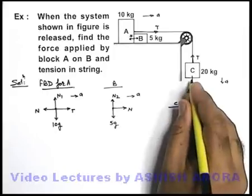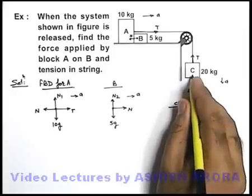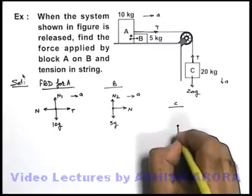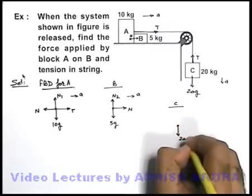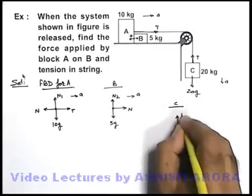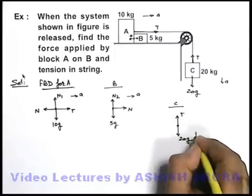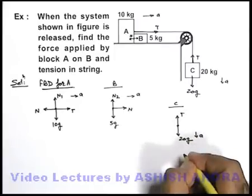Similarly if we draw the free body diagram of block C, here you can see in downward direction it is experiencing 20g, and in upward direction it is experiencing the tension. It is coming down with an acceleration A.